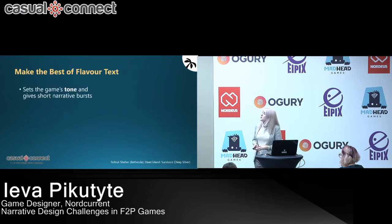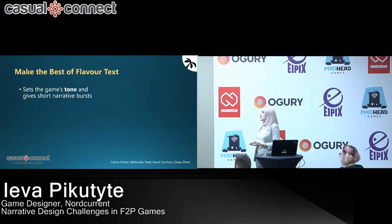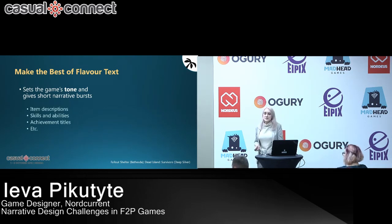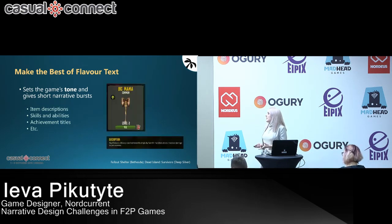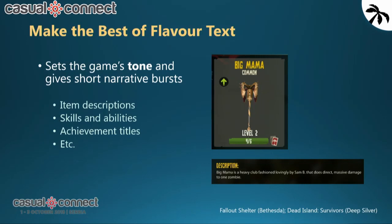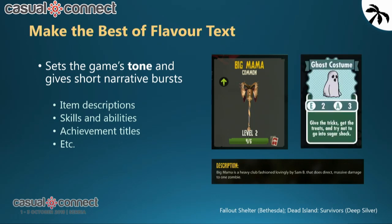You can make the best of text and enrich your world with flavor text elsewhere. Flavor text can help you set the game's tone and give short narrative bits about the game, the world and its characters — in item descriptions, skill tooltips, achievement titles and whatever other context you have. For example, this heavy mace from Dead Island is personal — it has a name, it was fashioned lovingly by Sam Bee, who is a character. It's not just a placeholder object; it already has some story behind it. The way Fallout Shelter does its armor descriptions sets the tone: this is a lighthearted, casual game that doesn't take itself very seriously.